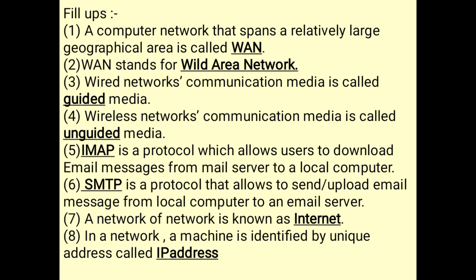A computer network that spans a relatively large geographical area is called a WAN (Wide Area Network). Wired network communication media is called guided media, while wireless network communication media is called unguided media. IMAP is the protocol that allows users to download email messages from a mail server to a local computer. SMTP is the protocol that allows sending and uploading email messages from a local computer to an email server.